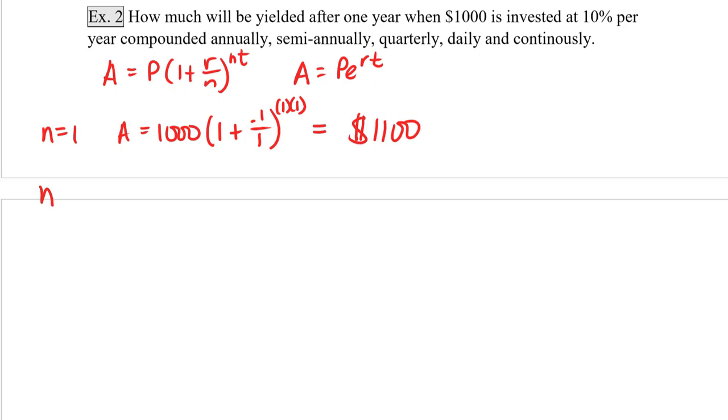Second is when we are compounding semi-annually, which means n is equal to 2. So A equals 1,000(1 plus 0.1 over 2) to the 2 times 1. And this is equal to $1,102.50.